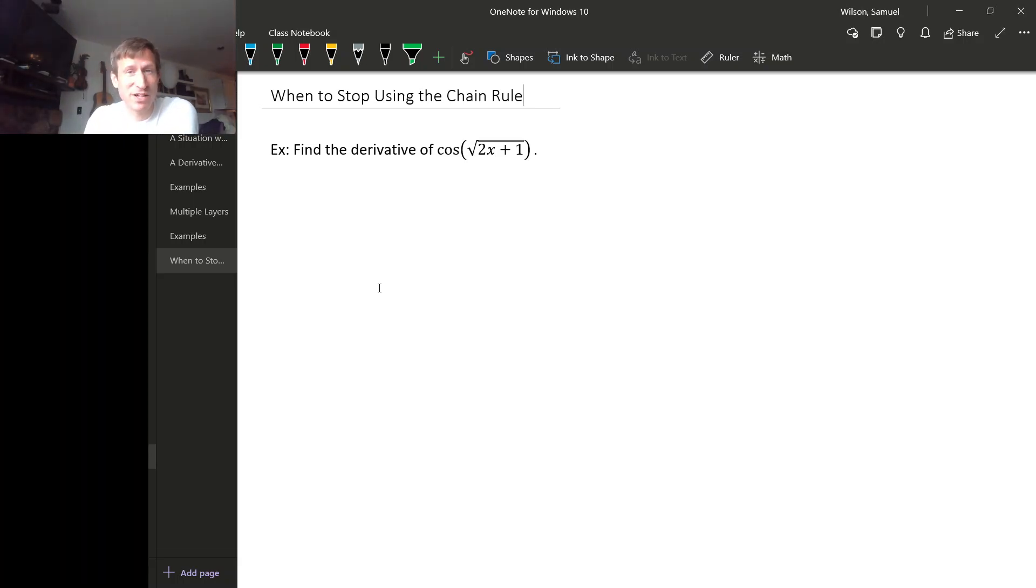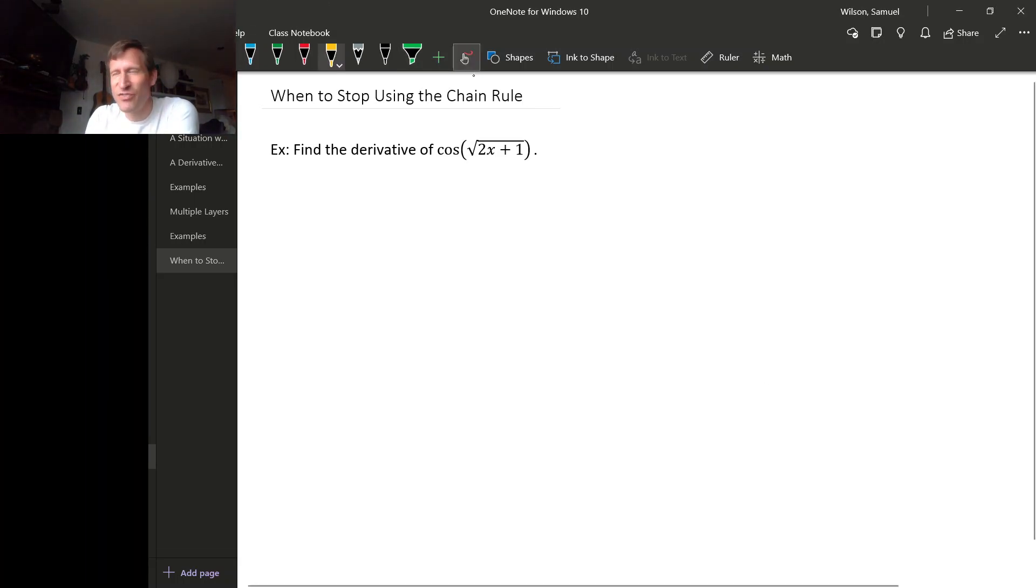One common question that I get about the chain rule is, if I'm always needing to multiply by the derivative of what's inside, when do I stop doing that?